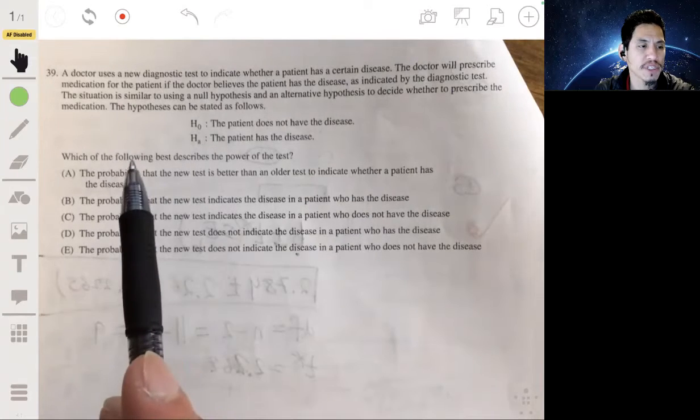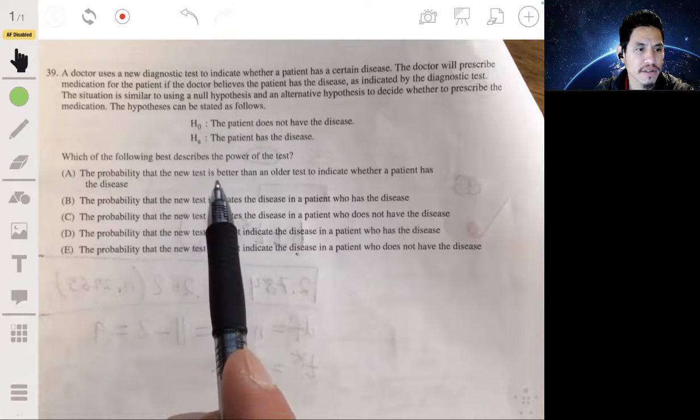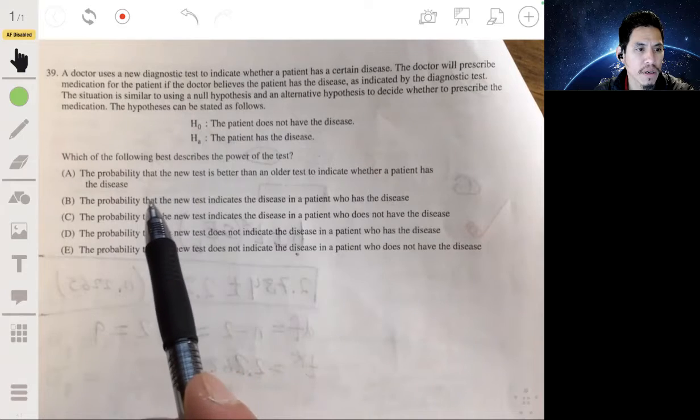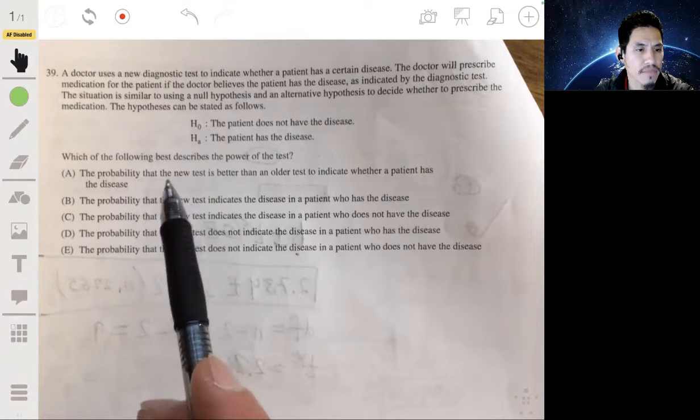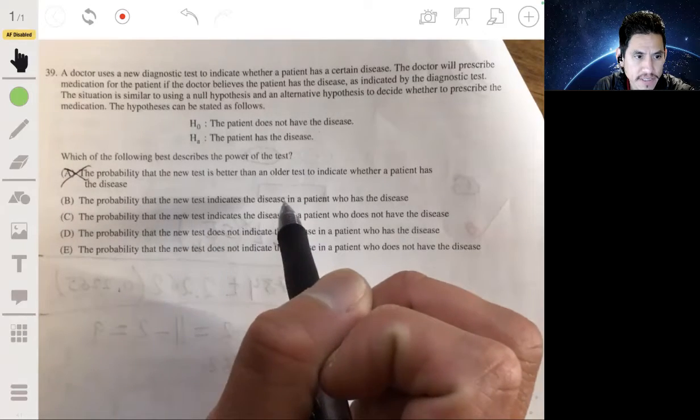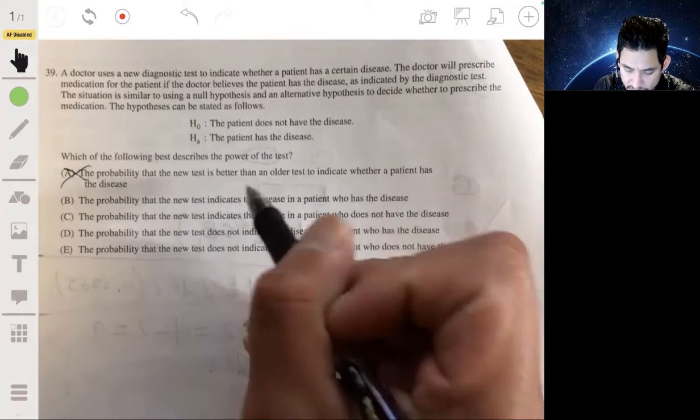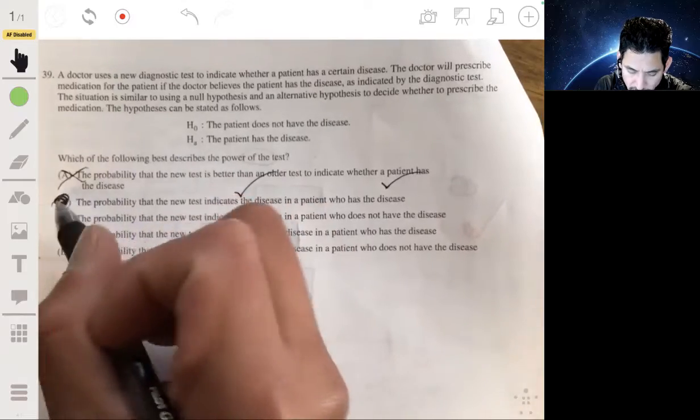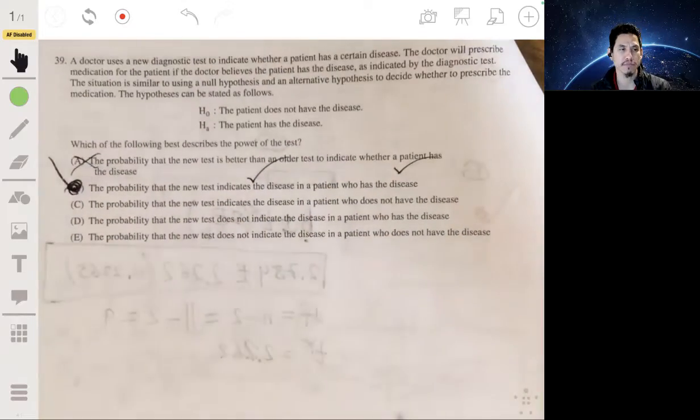So let's see which of these will work. The probability that the new test is better than the older test indicates whether... Nope. Nope. They're over-complicating that. B, the probability that the new test indicates a disease in a patient who has a disease. Yeah, see, so it comes to the right conclusion. That's what we want. That's exactly what power is in this case. So the answer would be B.